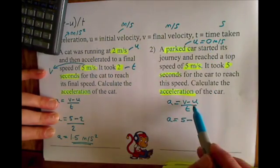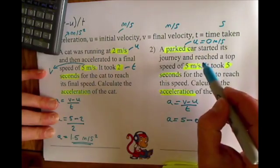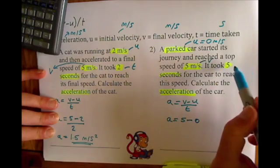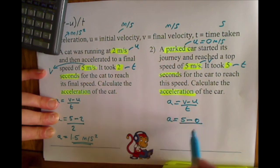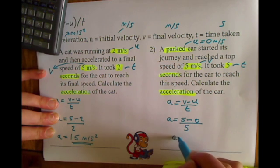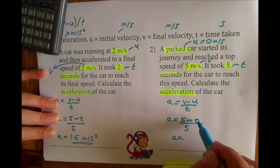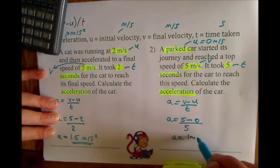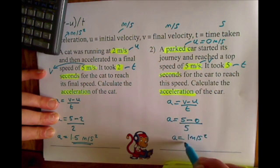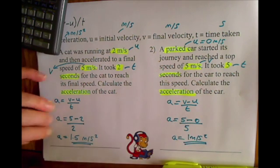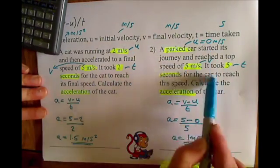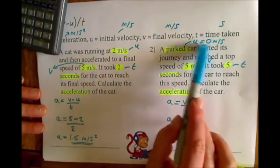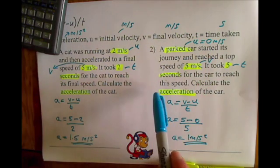So we can put u into our equation. We've used our v, so finally we need t. So 5 minus 0 divided by 5 seconds gives you an acceleration of 1 meter per second squared. If they don't give you the initial velocity, read through the question carefully — have they hinted that it started at 0 meters per second?